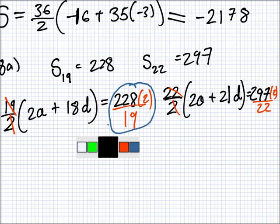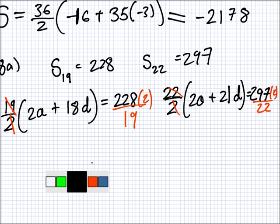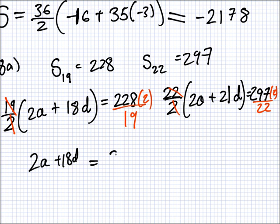Now, do you mind typing that in for me, please? Does that have a nice, neat number? It's exactly 24. And, what about here, 297 times 2 over 22 should be, hopefully, nice as well. 27. Great.